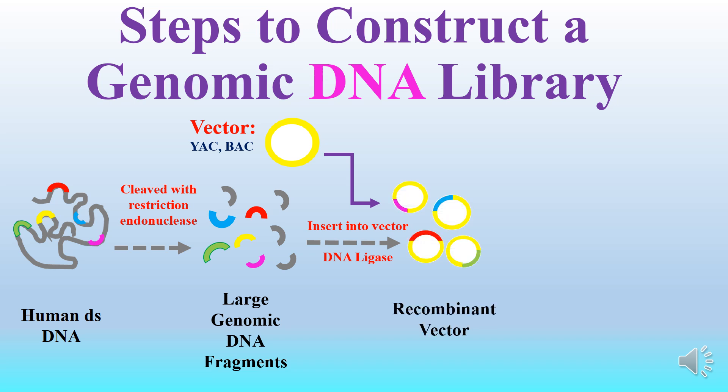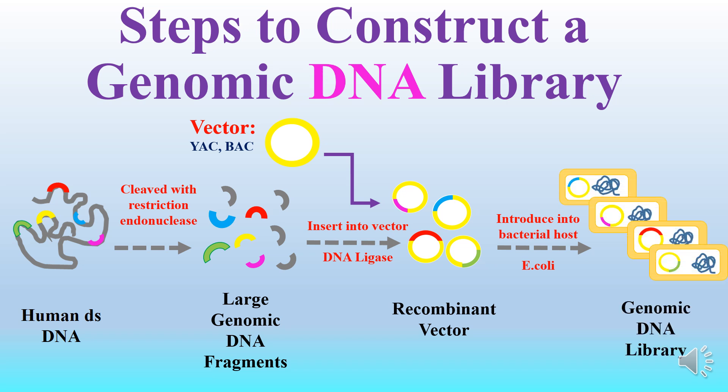With the help of T4 DNA ligase, a recombinant vector is formed. The recombinant vectors are then inserted and grown in a bacterial host cell — the suitable bacteria is E. coli. These bacteria replicate their genome along with the vector genome, and a collection of clones containing all sequences from the original source forms the gene bank, or genomic library.